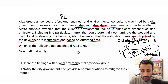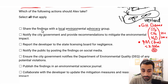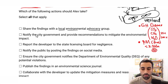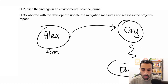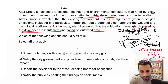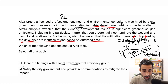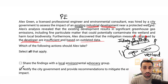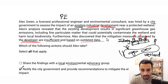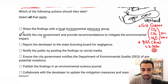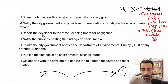Option B: Notify the city government and provide recommendations to mitigate environmental impact. Yes — the city government is who Alex is working for. They hired Alex to do the consultation and assess the mitigation measures. It just makes sense to go to the city and tell them what was found. We would select this one — it is logical and obvious.